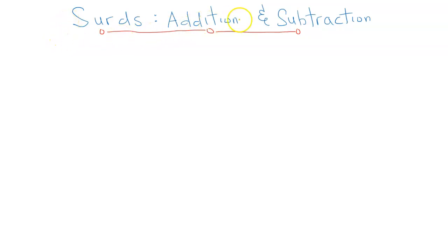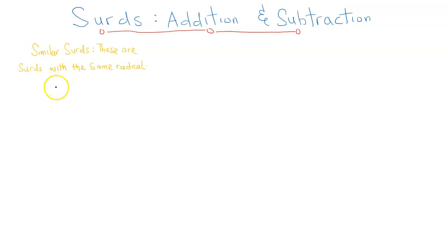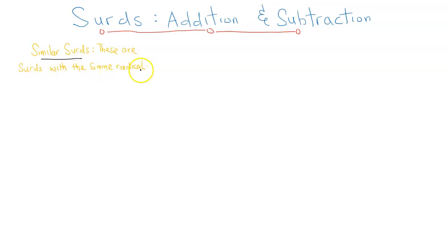For getting started on addition and subtraction of surds, we need to know what is called similar surds. These are surds with the same radical. Radical is another word for surd.